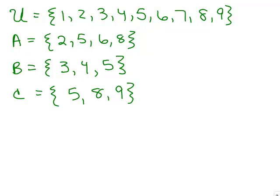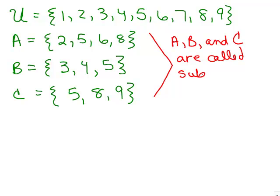These are all subsets. A, B, and C are called subsets of the universal set. So a subset has either the same amount of elements or fewer elements than the bigger set.